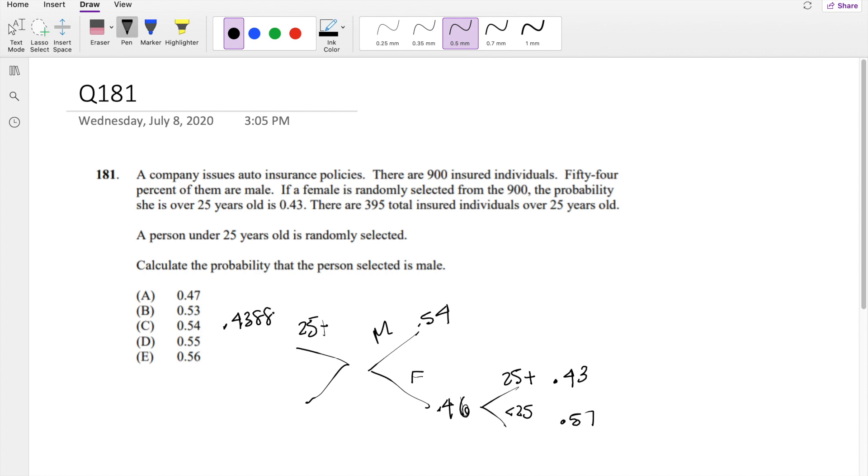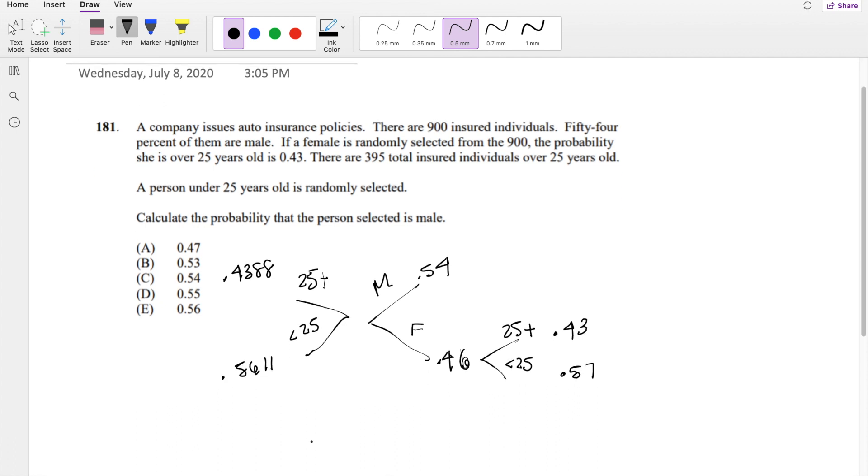So that means less than 25 is just equal to 0.5611. And we're looking for, given that they're less than 25, calculate the probability that the person is male.